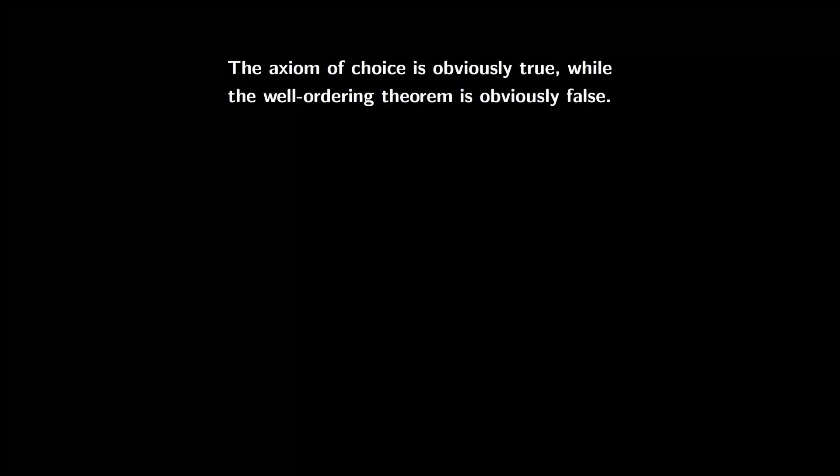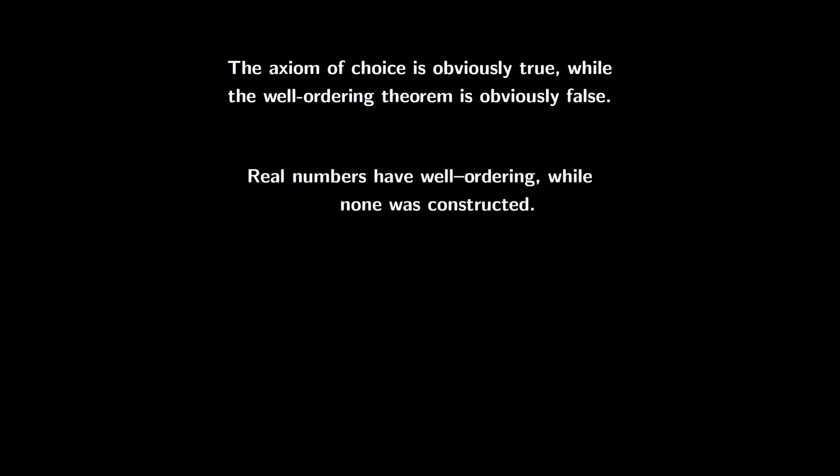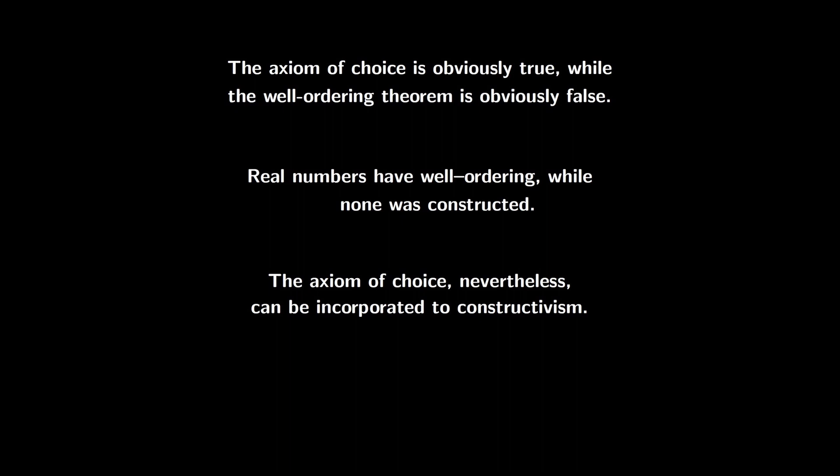Jerry Bona joked that the axiom of choice is obviously true, while the well-ordering principle is obviously false. It's a joke because they are equivalent. What bothers some mathematicians is that with the axiom of choice we can claim that real numbers are well-ordered, but no construction is given. Some have made an effort to build mathematics constructively using intuitionistic logic, and an effort was made to incorporate the axiom of choice without violating principles such as the law of excluded middle.